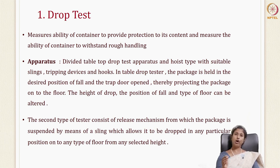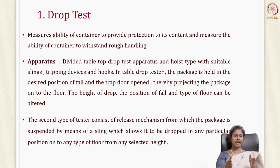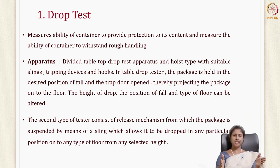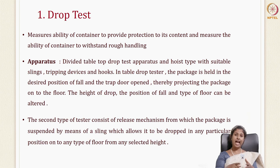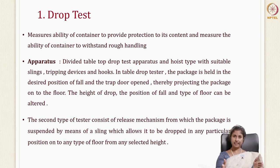There is also a hoist type drop tester. In the table top drop test, the package is held in the desired position at a particular height, and a trap door is opened so the package falls to the ground. The height of the drop, the position of the fall, and the type of floor will decide the damage that happens to the package. In the hoist type, the package is suspended on a sling with an adjustable height and release mechanism.